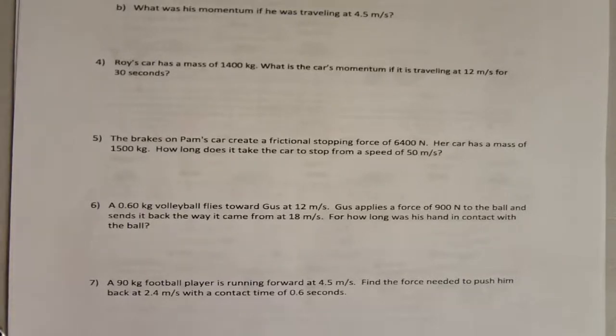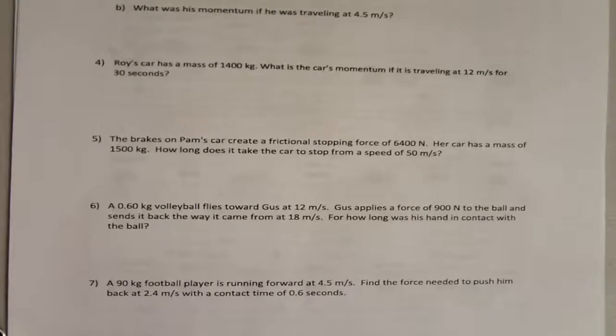A 0.6 kg volleyball flies towards Gus at 12 meters per second. Gus applies a force of 900 newtons to the ball and sends it back the way it came from at 18 meters per second. How long was his hand in contact with the ball?